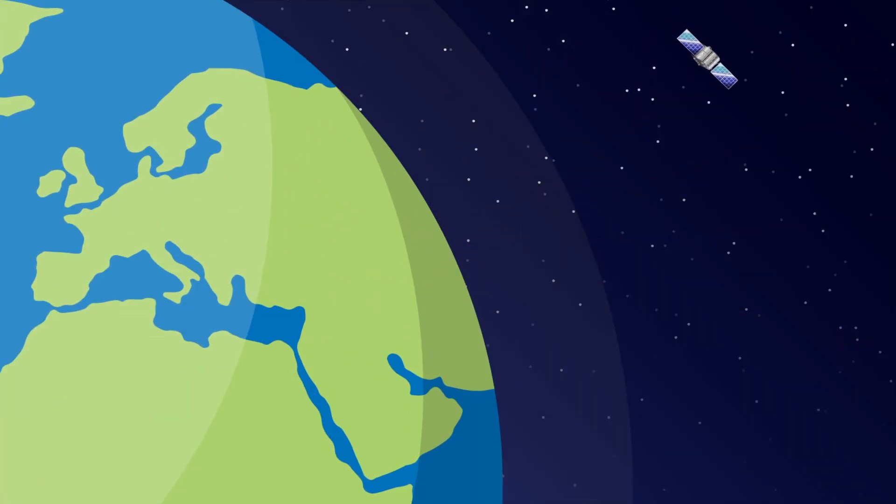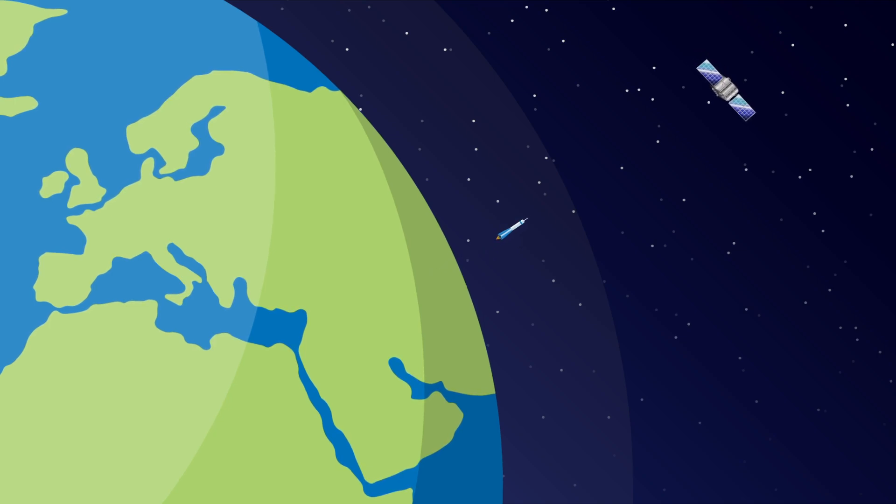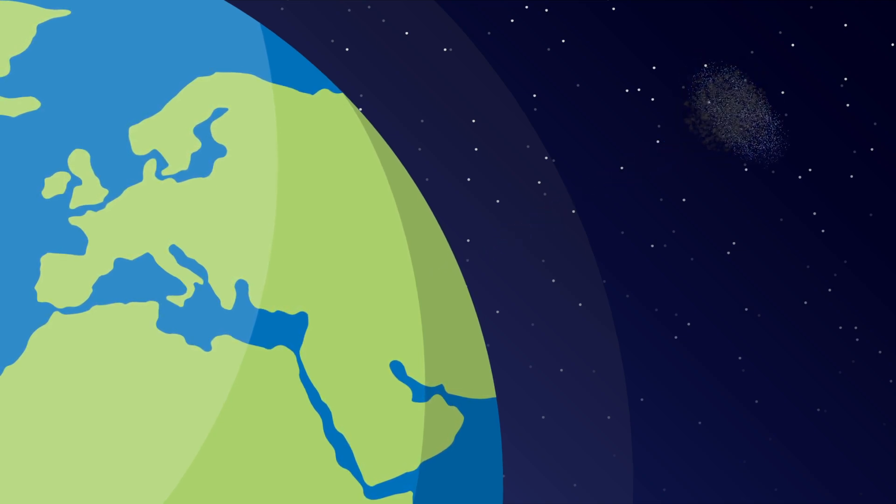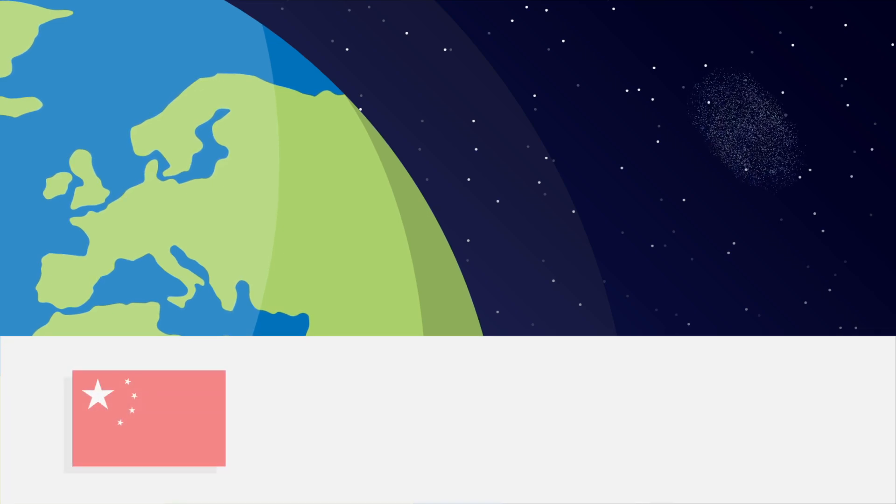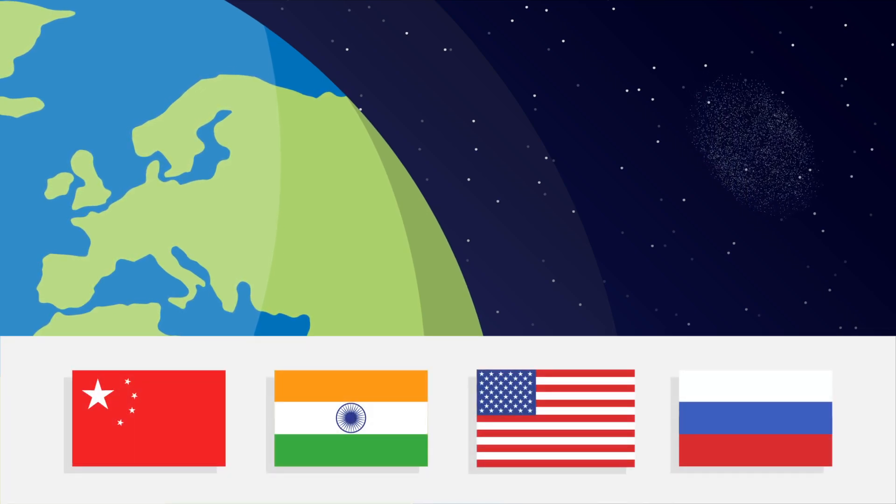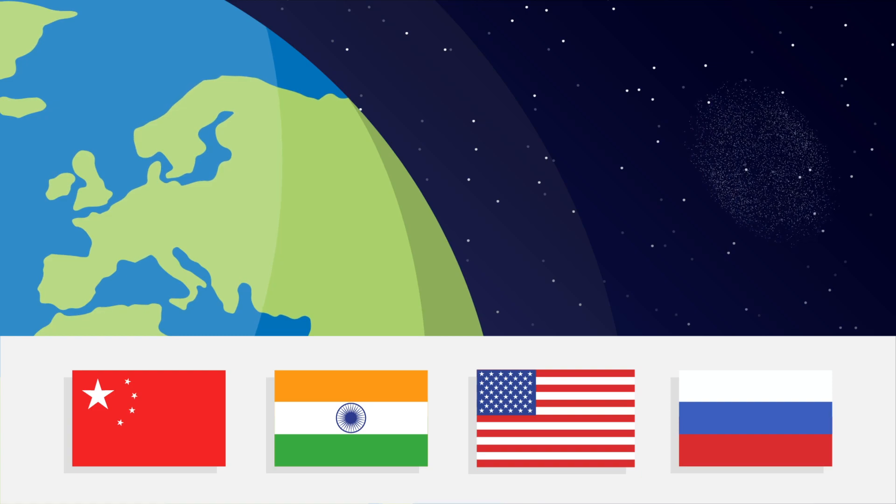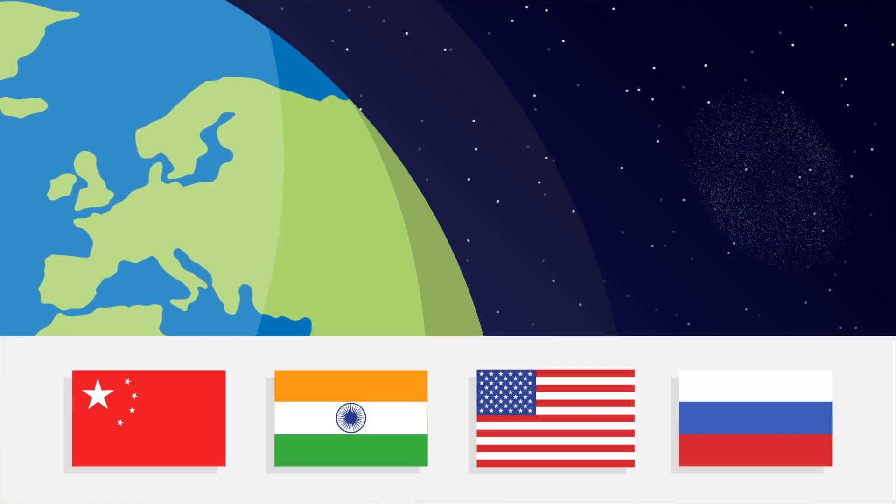Although not all collisions in space are accidental, some result from specific military exercises and tests called anti-satellite tests. Countries like China, India, US, and Russia have successfully launched missiles to shoot down their satellites.